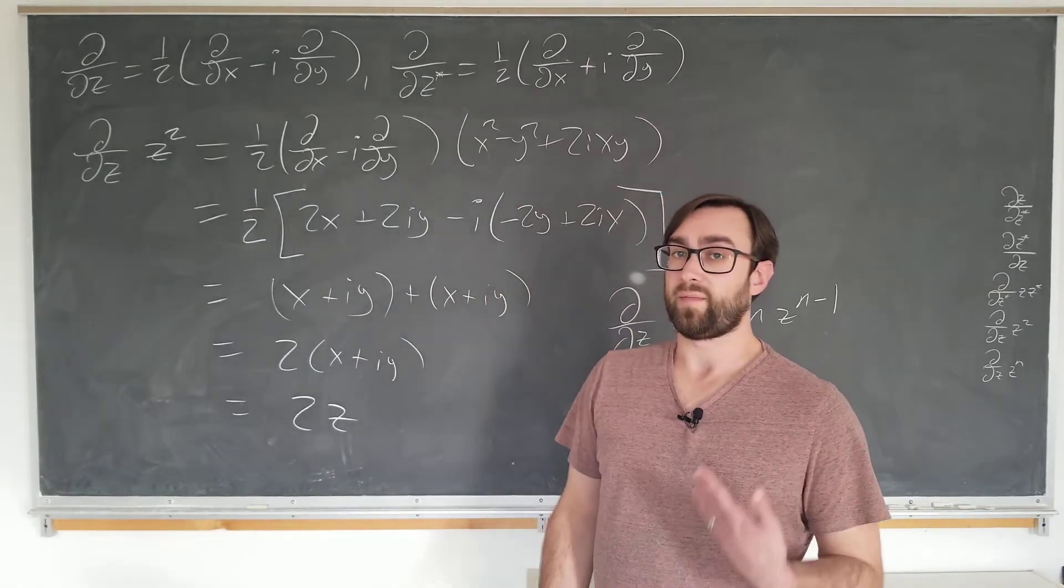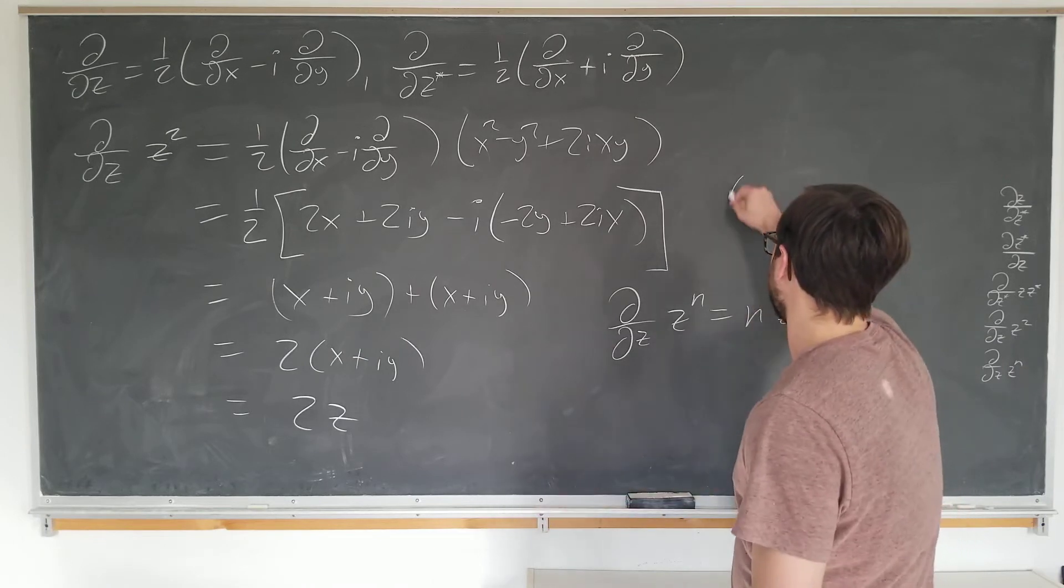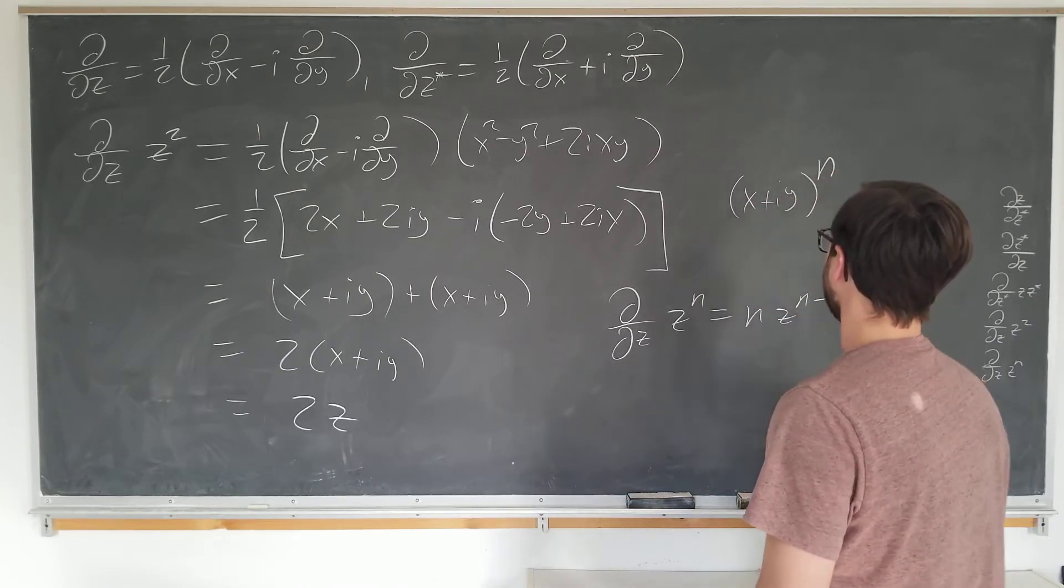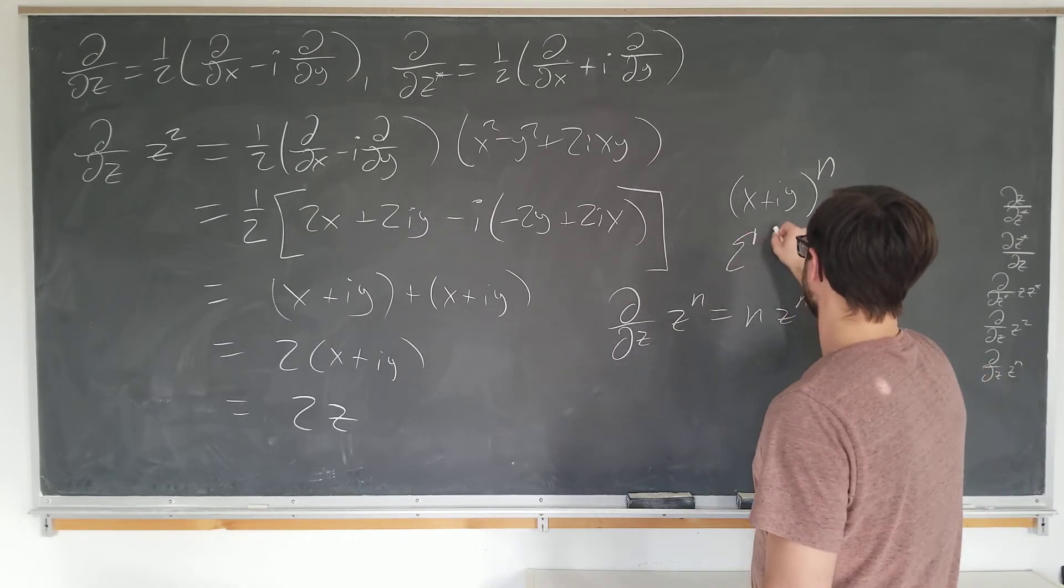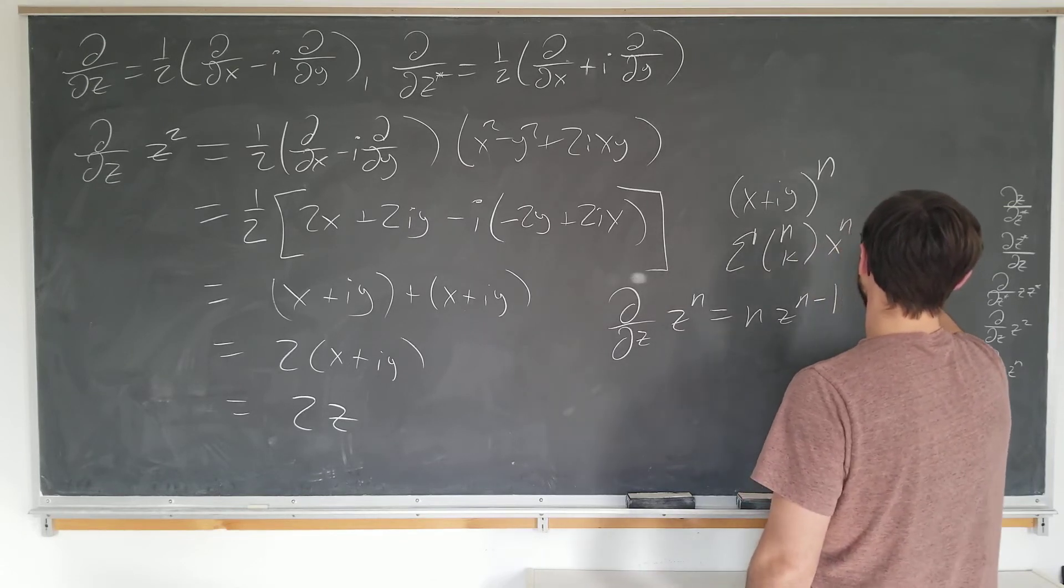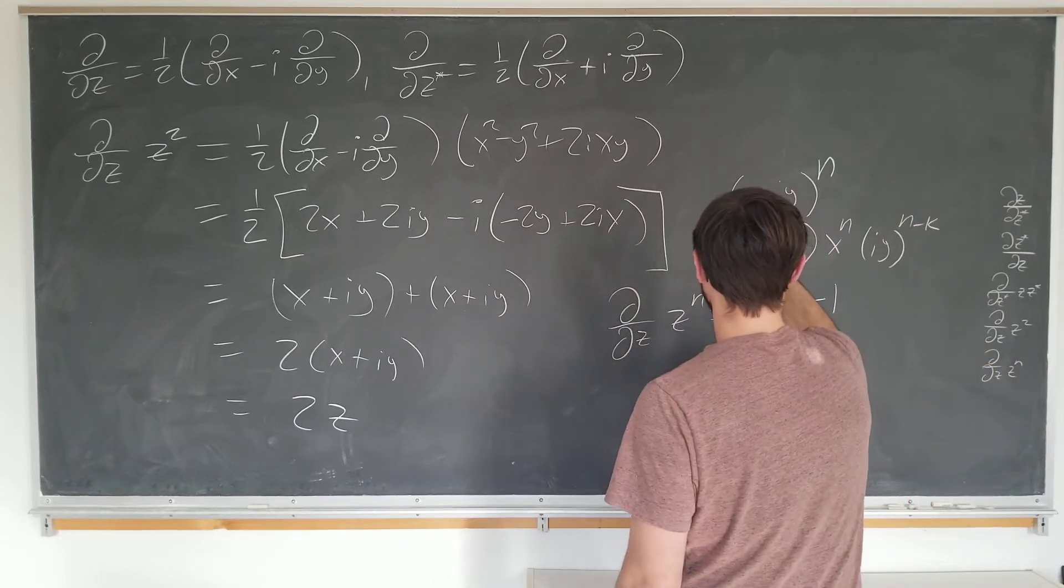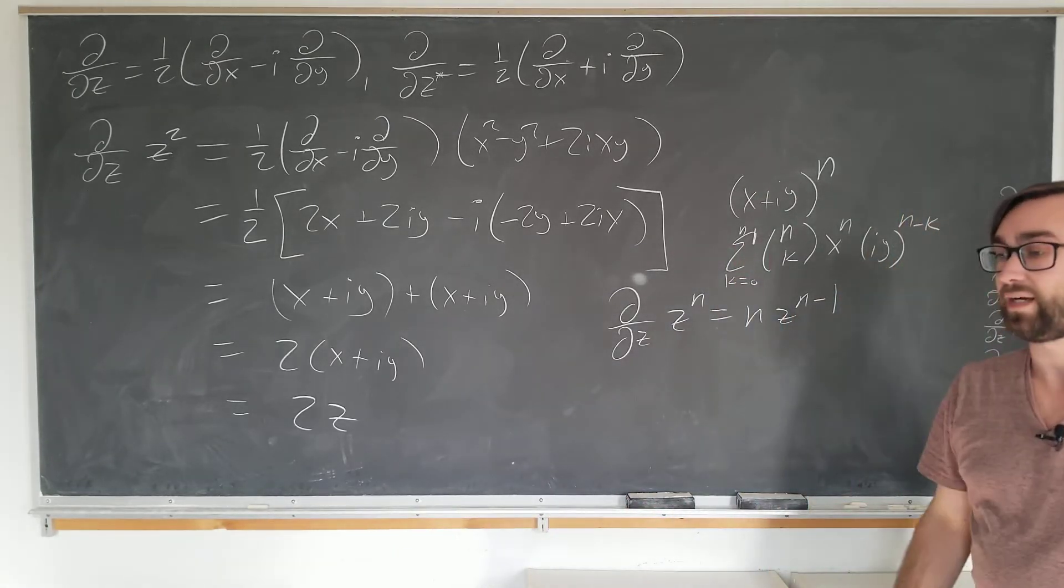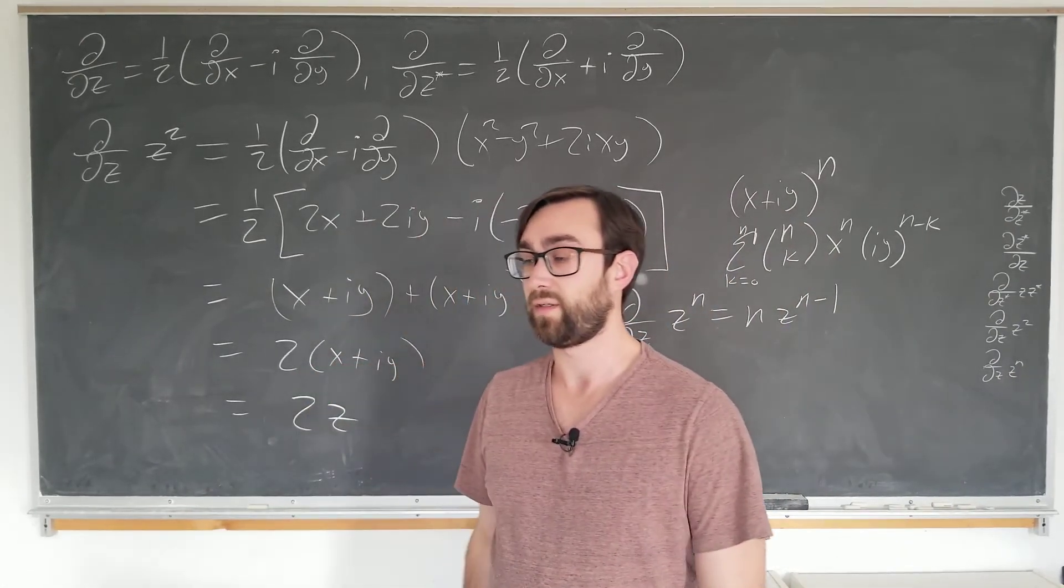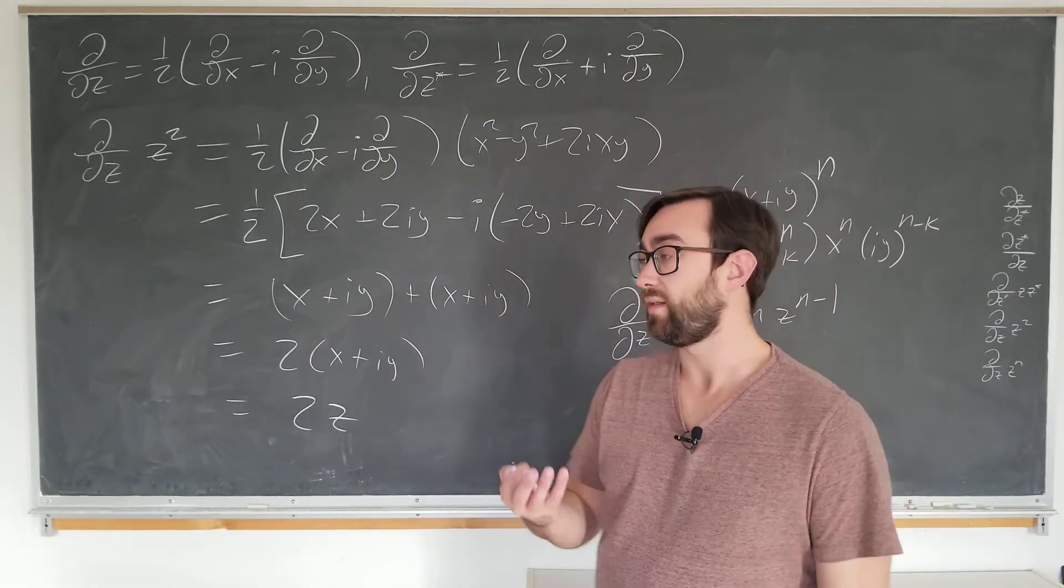There are a few ways to proceed at this point. A more complicated way, which I myself have never satisfactorily been able to solve, is to expand x plus i y to the n in a binomial expansion. So that's binomial coefficients, x to the n, i y to the n minus k. This is just really messy. I'm sure that you can do it. I've spent an embarrassingly large amount of time on it and I wasn't able to do it. So I'm going to present to you a different method in this video.